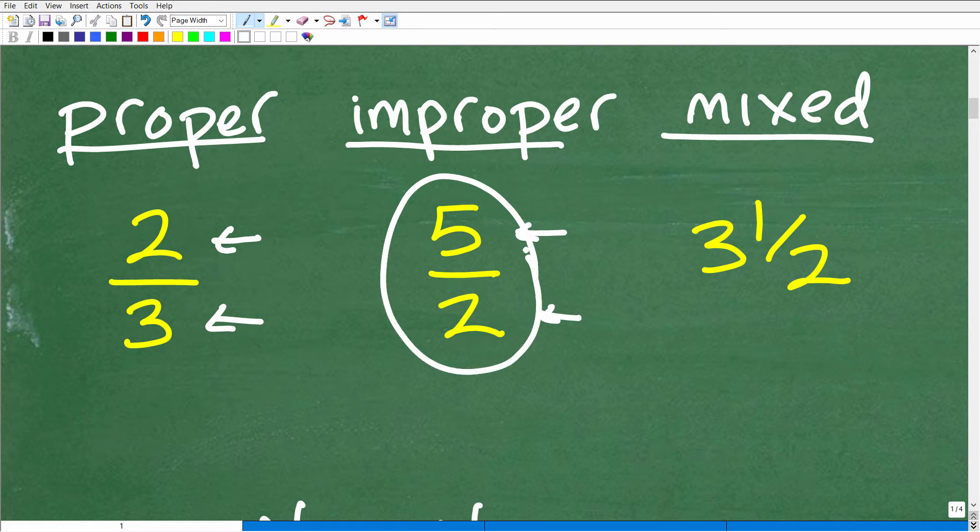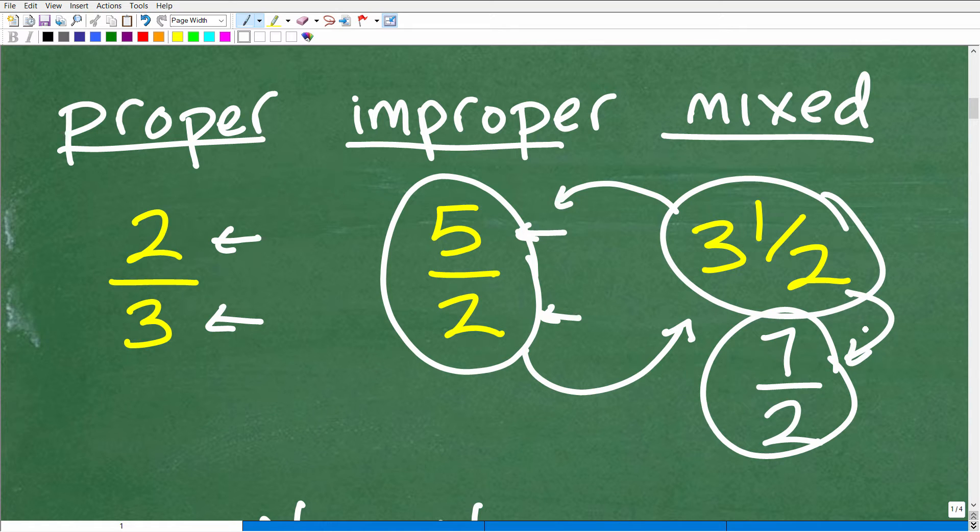And you can convert or write all improper fractions as mixed numbers. So a mixed number fraction would be something like three-and-one-half. And mixed number fractions you can write as an improper fraction. So how do we do that? In this case, it would be two times three is six. Six plus one is seven. So this would be seven-halves. So three-and-one-half, that mixed number fraction written as an improper fraction, is seven-halves. So a real basic fraction terminology that hopefully you know.